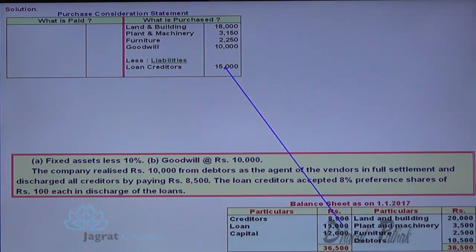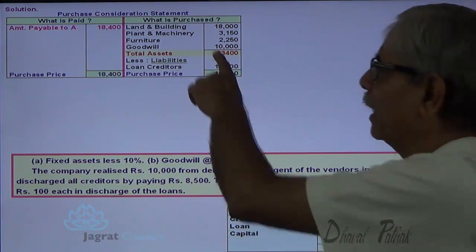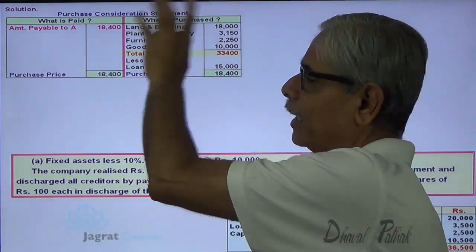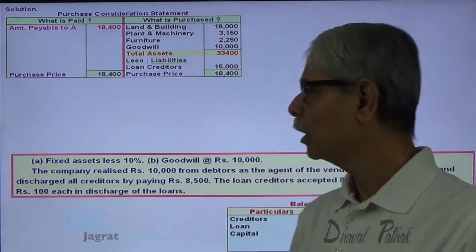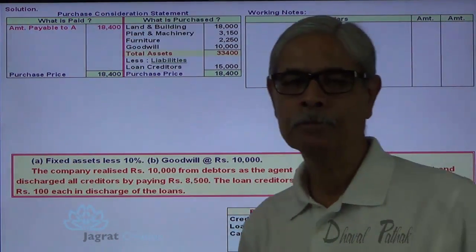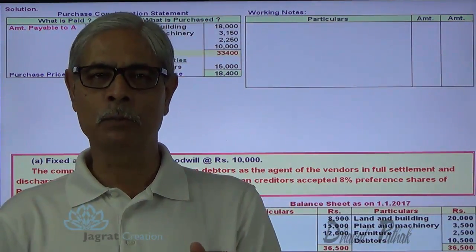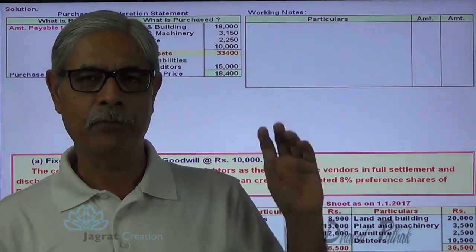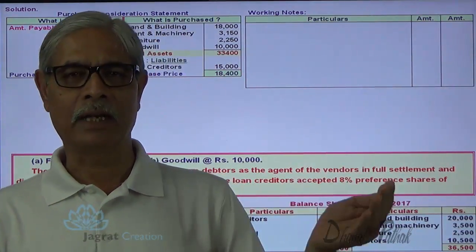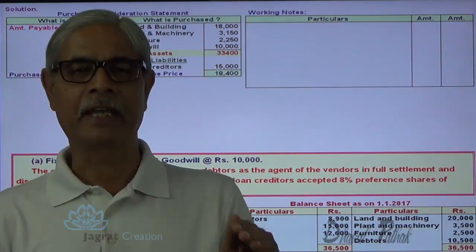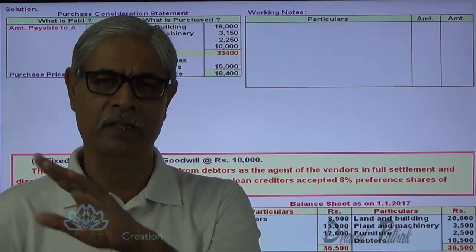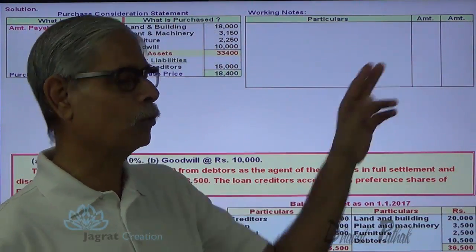The loan is taken over at Rs. 15,000. Net assets purchased — total assets minus total liabilities — gives the amount payable to Mr. A, which is Rs. 18,400. Now I want to prepare a working note. The company has assumed to collect the debtors and pay the creditors on behalf of vendor Mr. A. Loss on collection is a loss of Mr. A, and gain on payment of creditors is a gain of Mr. A. I will write entries accordingly.